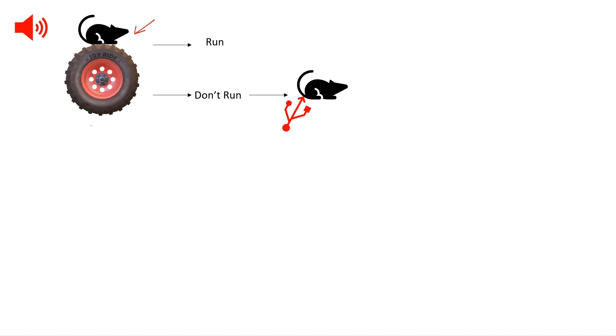In that case, the rat was getting an electric shock. So that means not running is associated with a punishment. After repeating this particular course of action for a certain number of times, the rat will learn to associate the sound with pain.